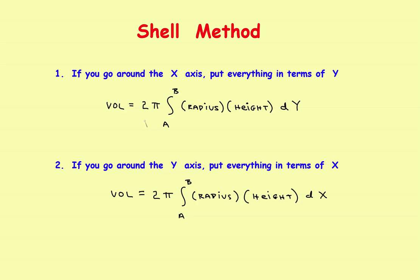Remember, the equations from the first video were this. If you're going to take this thing around the x-axis, or horizontal, put everything in terms of y. If you're going to take it around the y-axis, or vertical, then put everything in terms of x. You need to find the radius and the height of an individual shell. The first example will go around the y-axis with a vertical shell.